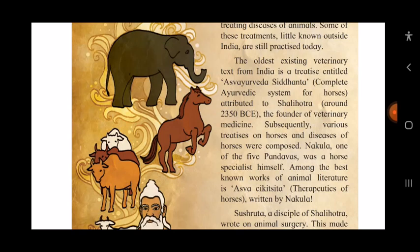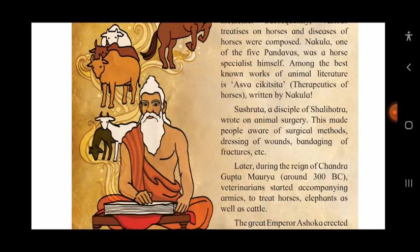Nakula, one of the five Pandavas — the five brothers — was a horse specialist himself. Among the best known works of animal literature is 'Asva Kikitsa,' that is, therapeutics of horses, meaning treatment of horses. It was written by Nakula, the horse specialist among the brothers.